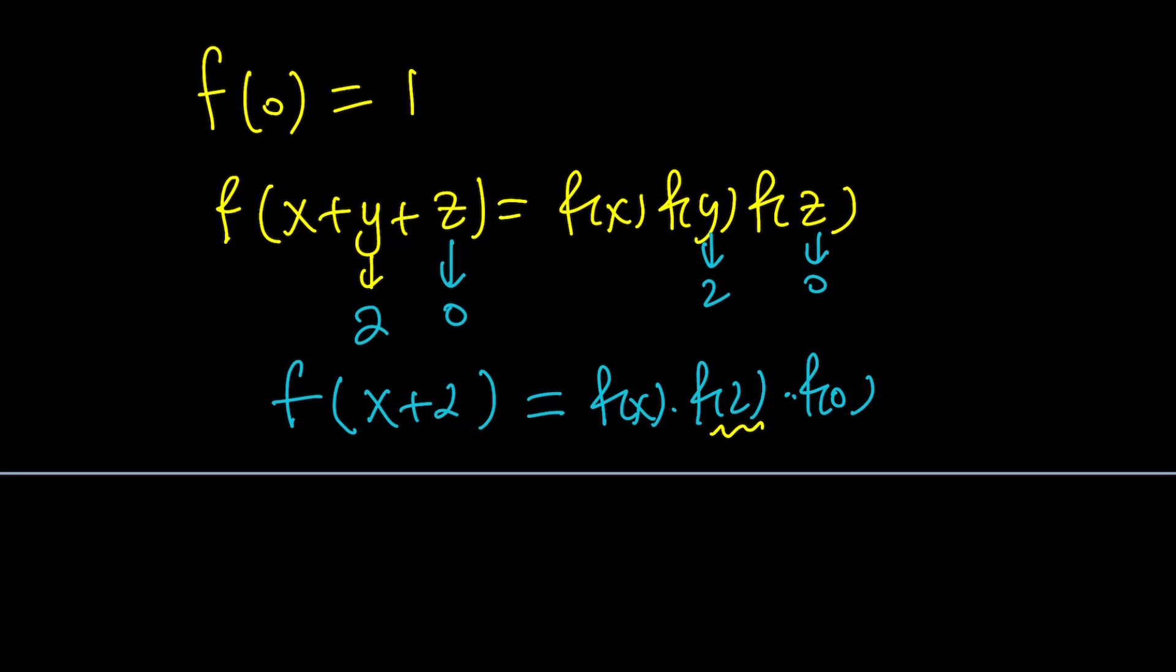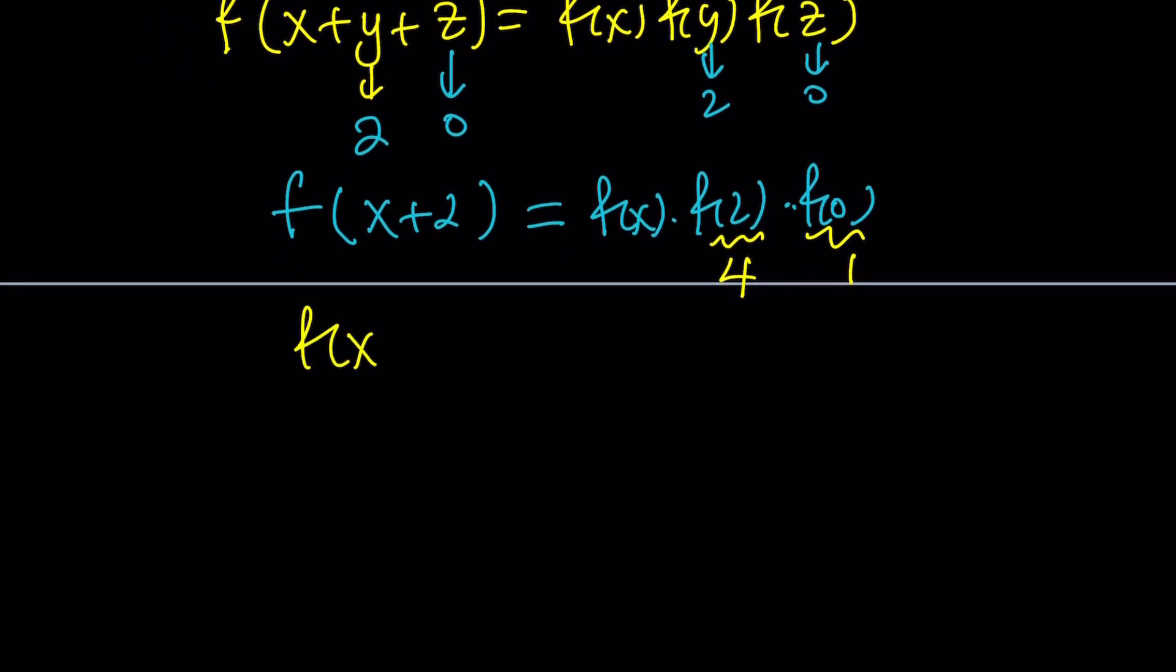Well, we do know that, or at least it's given that f(2) is equal to 4, and f(0), we just found to be 1. Awesome. From here, what are we getting? We get f(x+2) equals 4 times f(x). Awesome. Why is this important? Well, here's the thing. You are given f'(0), and you're supposed to evaluate f'(2), right? So the difference is 2, and the difference between x+2 and x is also 2, which means we can use this equation.